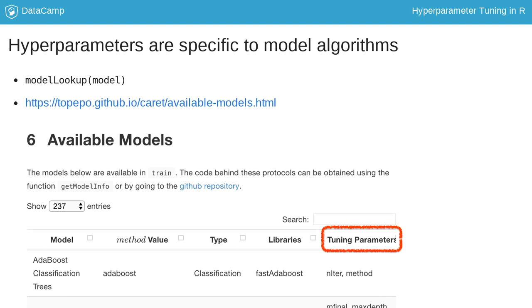There you will find an overview of the different algorithms you can set as method in the train function. This table includes the name of the model, the string you need to put into the train function, whether it can be used for classification or regression, and what the original R package of the implementation is. But most importantly, you will find which hyperparameters can be tuned.